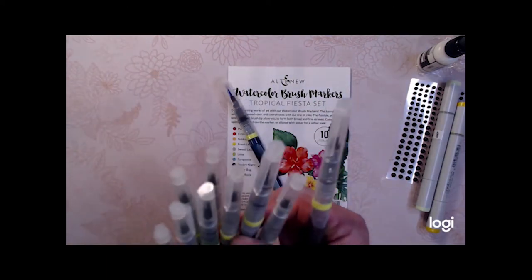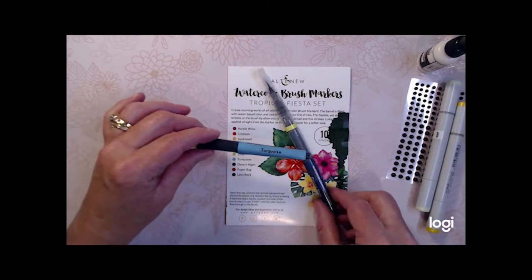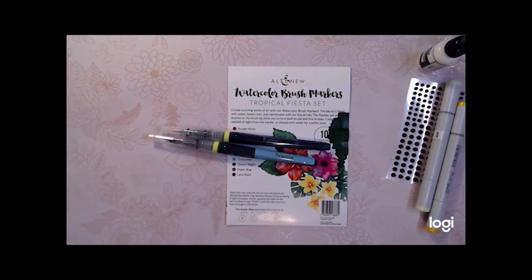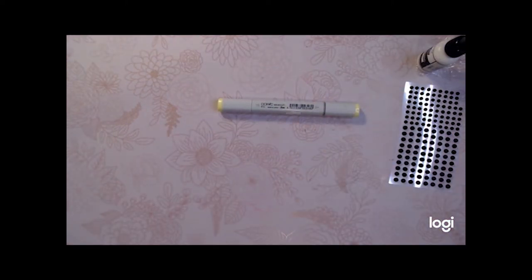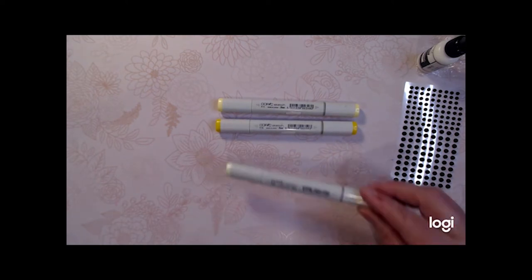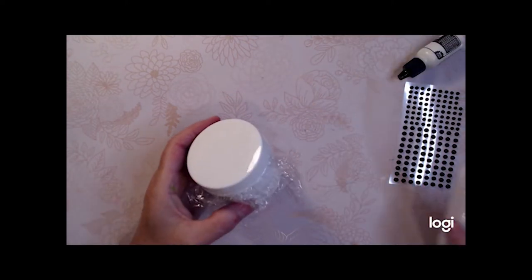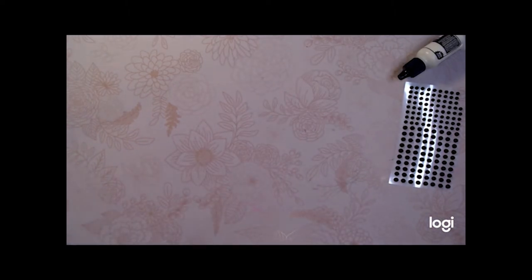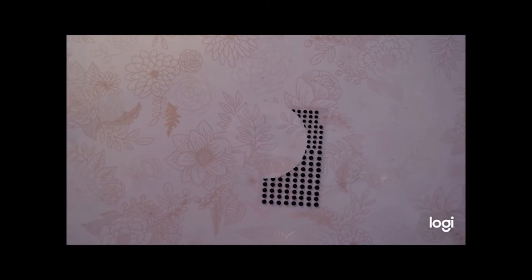I'm using Altenew's Watercolor Brush Markers, the Tropical Fiesta set. The two colors I'm using from this set are Turquoise and Desert Night. I'm also using Metallic Silver from another one of the Watercolor Brush Markers set. I'm using Copic Marker Y11, Y15, G40, and G43, and I'm using an embossing paste. I happen to pick up the shimmery white embossing paste that I have. I'm using some pigment reinker for a craft white ink and some black matte dots.